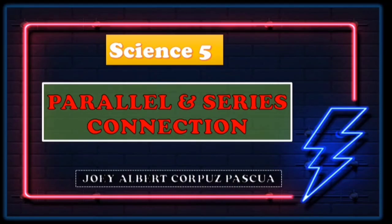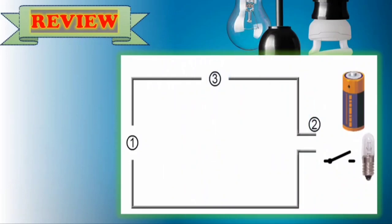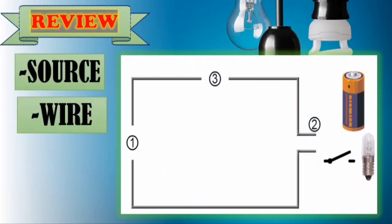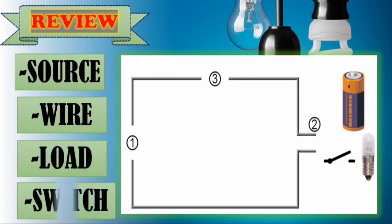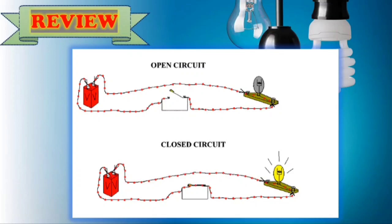Today, class, we will be discussing about series and parallel circuits. Last meeting, we discussed about the four important parts of an electric circuit: the source, the wire, the load, and the switch. You have also learned about the difference between a closed and an open circuit — that in an open circuit, electricity will not flow because there is a gap or no complete path from one end of the circuit to the other end. While in a closed circuit, the path of electricity is complete.